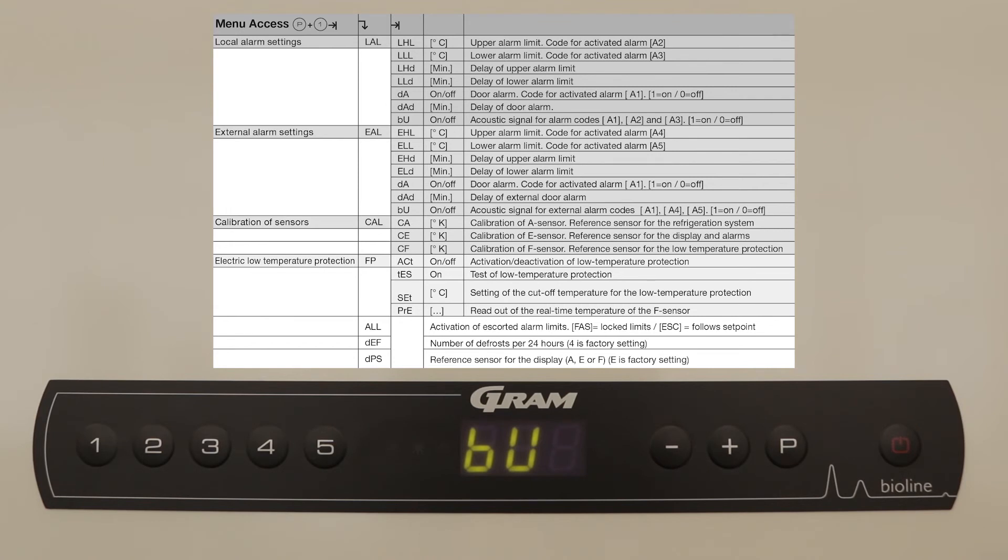The acoustic signal set to on will allow for the addition of an audible signal on top of the visual light and alarm code signal on the LED display should your unit fall outside of the set alarm parameters.